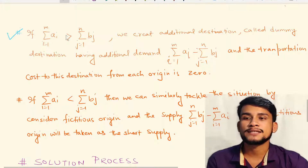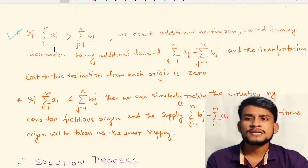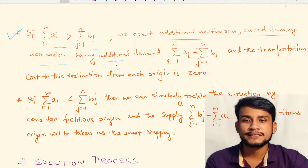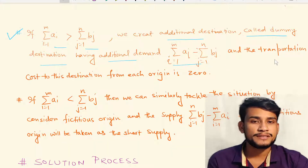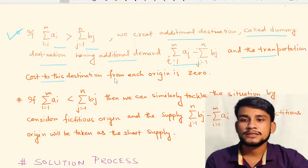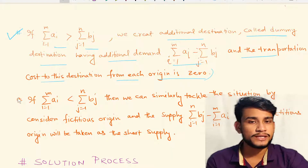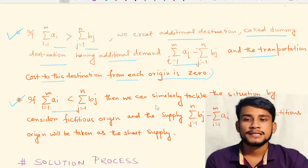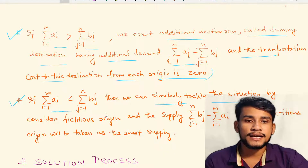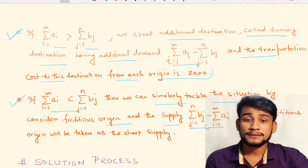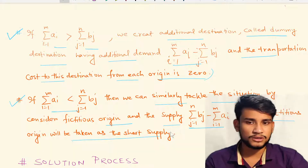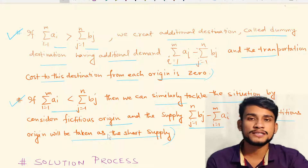If the problem is unbalanced, we first convert it to a balanced problem. Case 1: if Σa_i > Σb_j, we create additional dummy destinations with demand equal to Σa_i − Σb_j and transportation cost zero. Case 2: if Σa_i < Σb_j, we add a dummy origin with supply Σb_j − Σa_i, called the short supply.